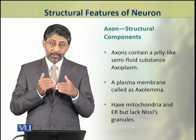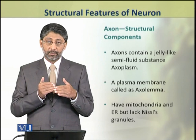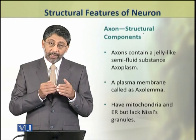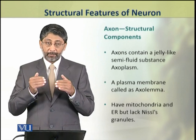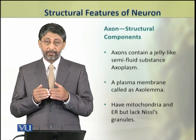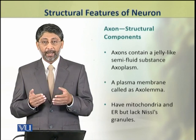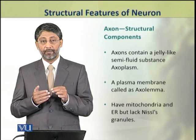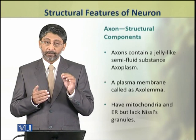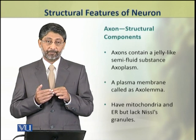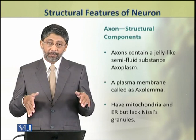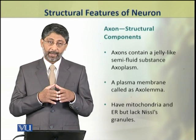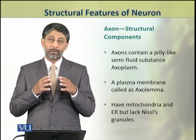The axon has a cytoplasm-like material in it that is jelly-like and semi-fluid, known as axoplasm. Similarly, the plasma membrane of the axon is known as axolemma.